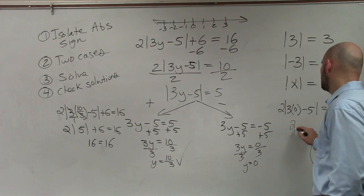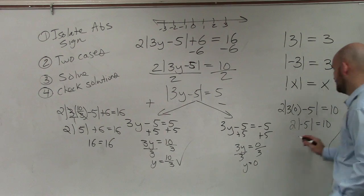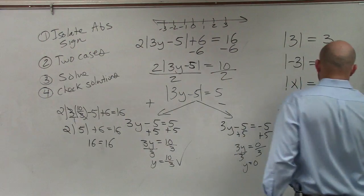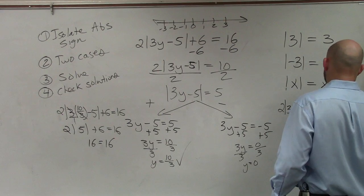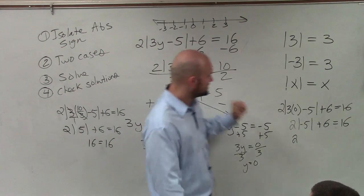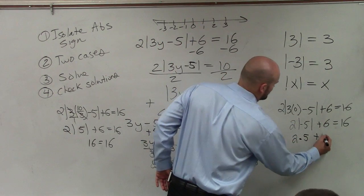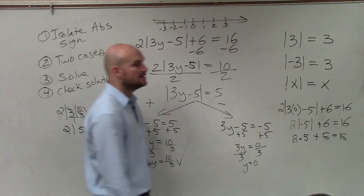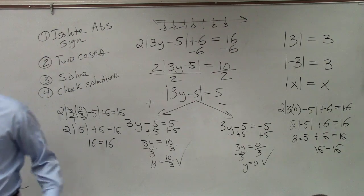Now check y = 0. Make sure you go back to the original equation. 3 times 0 is 0, and 0 minus 5 is negative 5. The absolute value of negative 5 is 5. Then 2 times 5 is 10, and 10 plus 6 is 16. And 16 equals 16. So yes, 0 is also a solution. Both solutions check out.